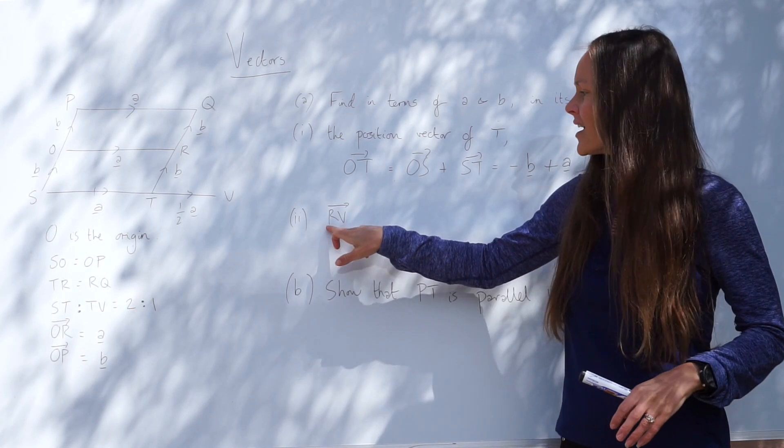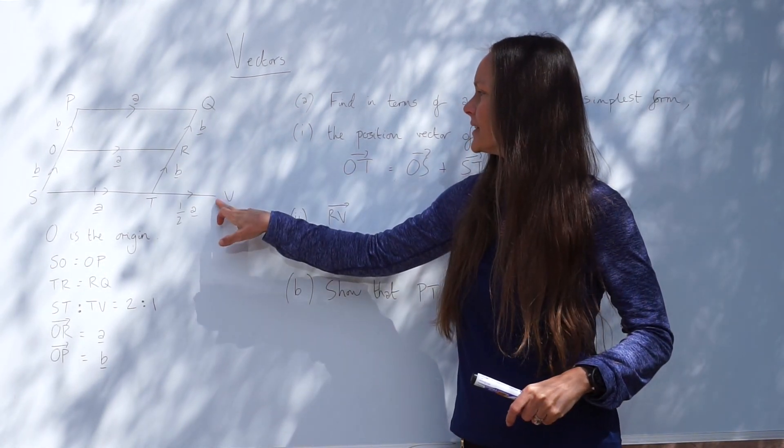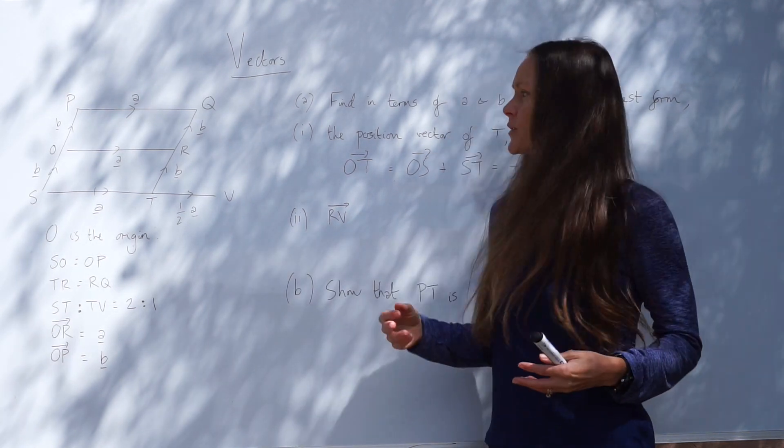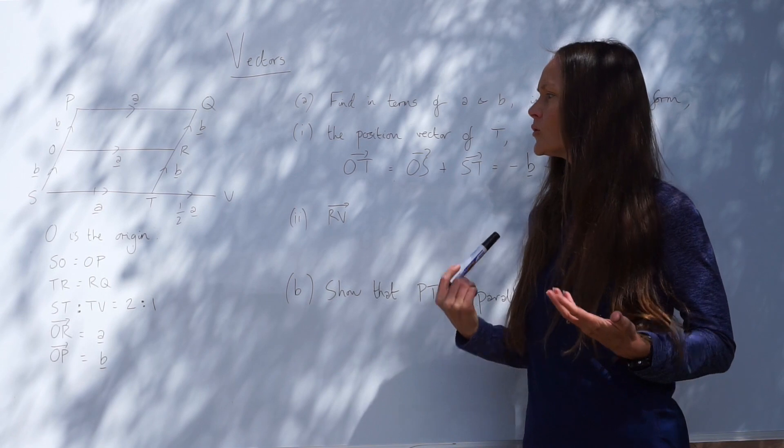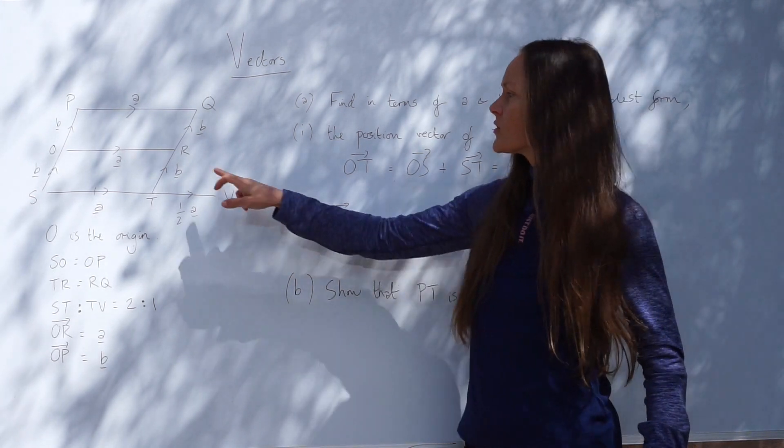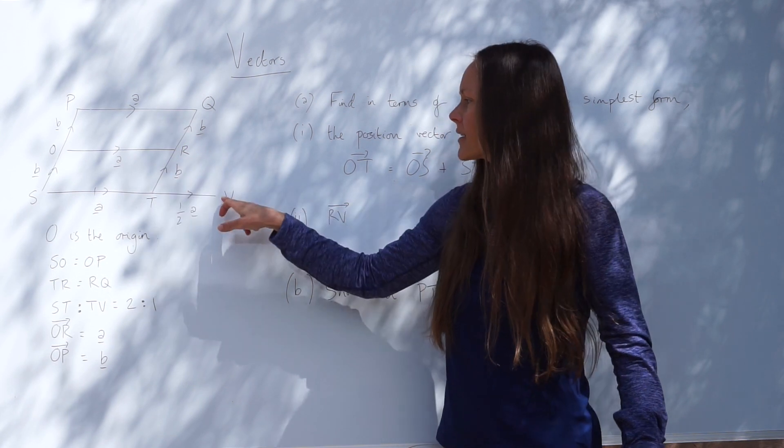Next we're going to work out RV. So R is here, and V is here. And remember, it doesn't matter which way you travel to get to V, as long as you simplify your answer, you should get the correct answer. I'm just going to travel the shortest looking way, so this way.